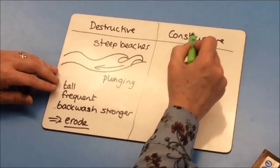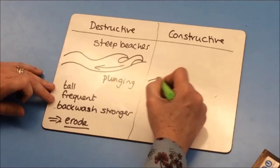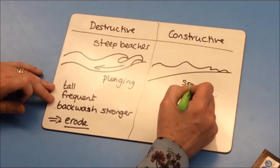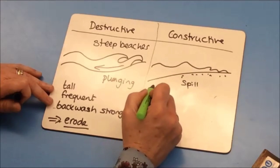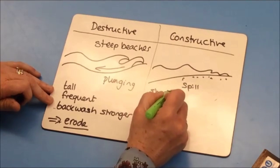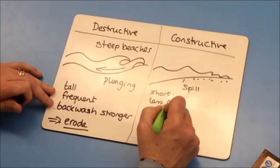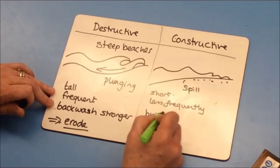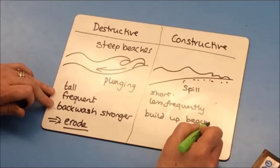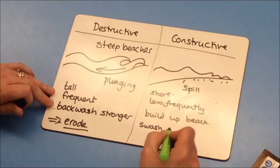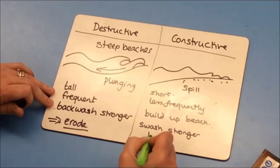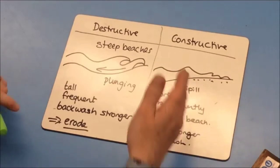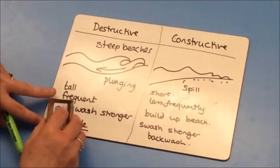Constructive waves, on the other hand, build the coastline. They are much smaller and spill onto the beach rather than plunge. They break less frequently. Because the swash is stronger than the backwash, they deposit material and build up the beach. So you have your destructive waves and your constructive waves.